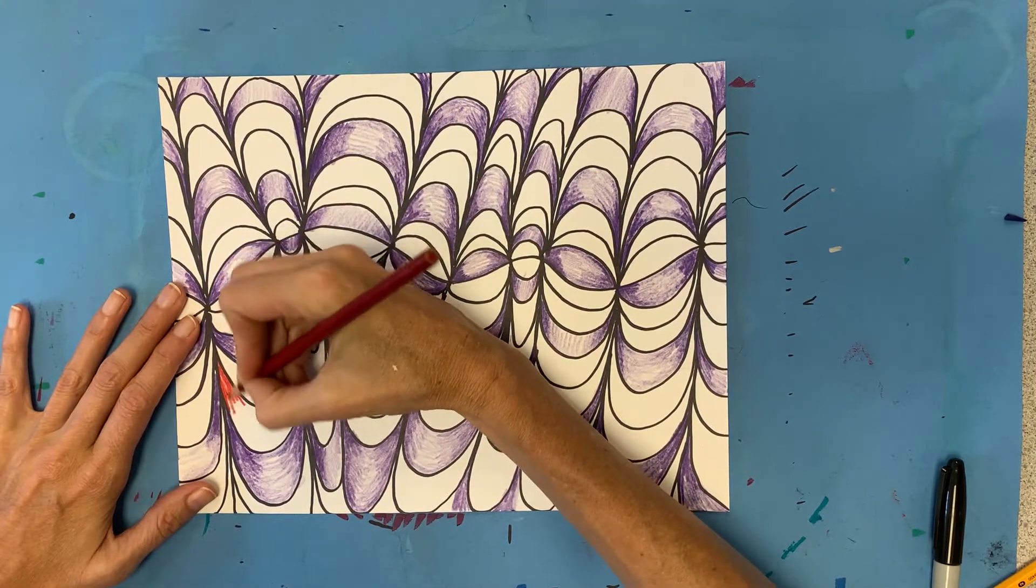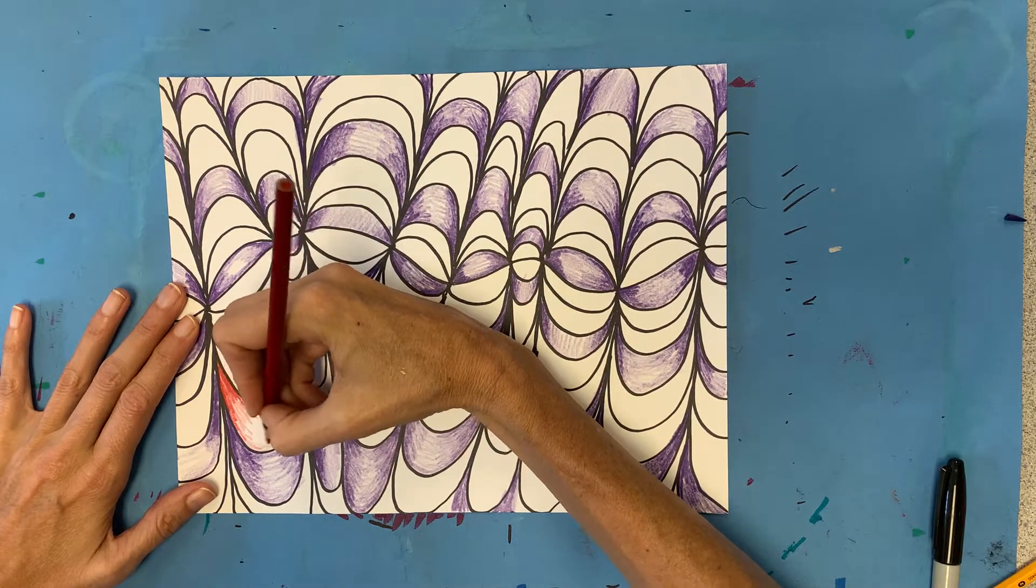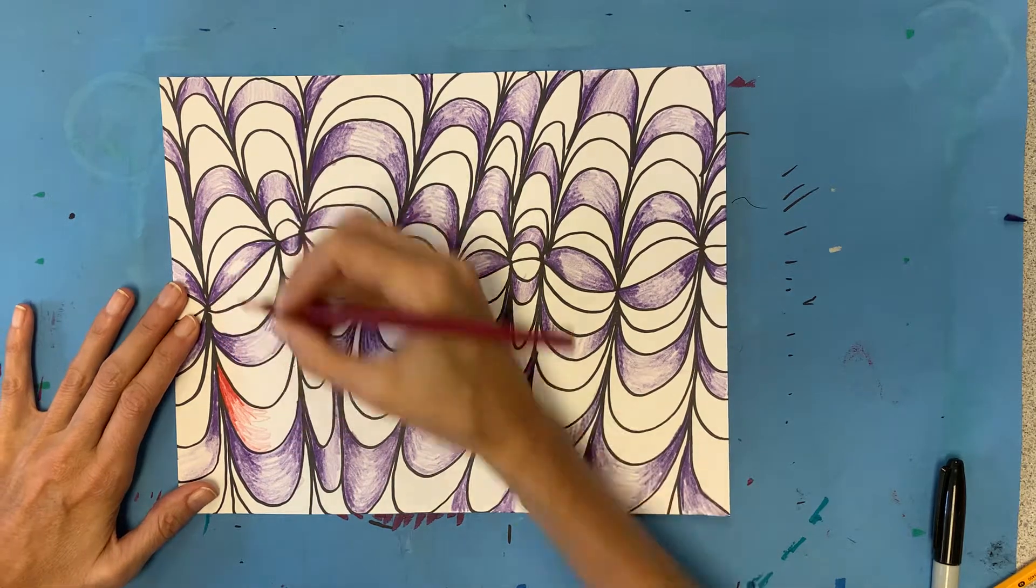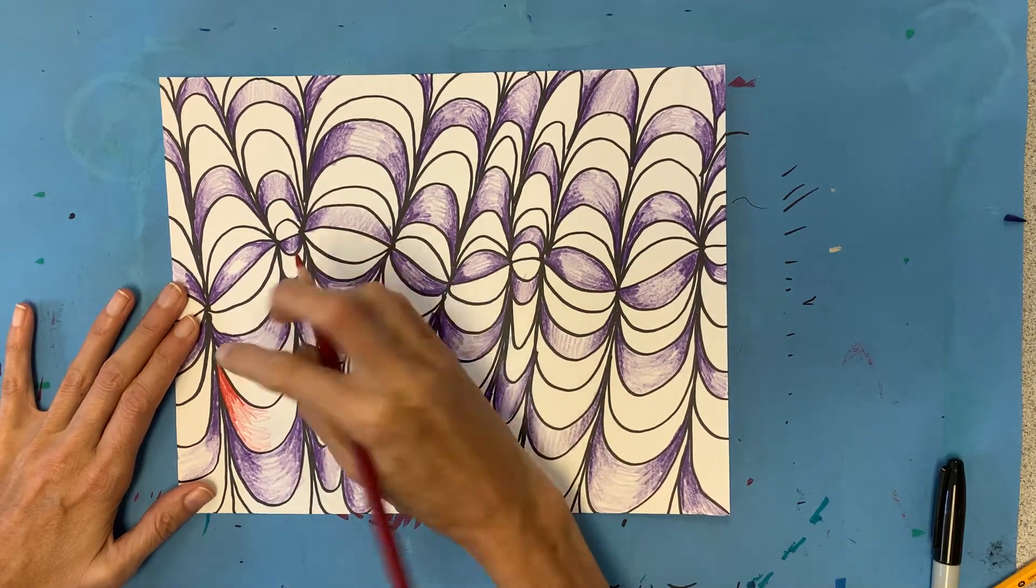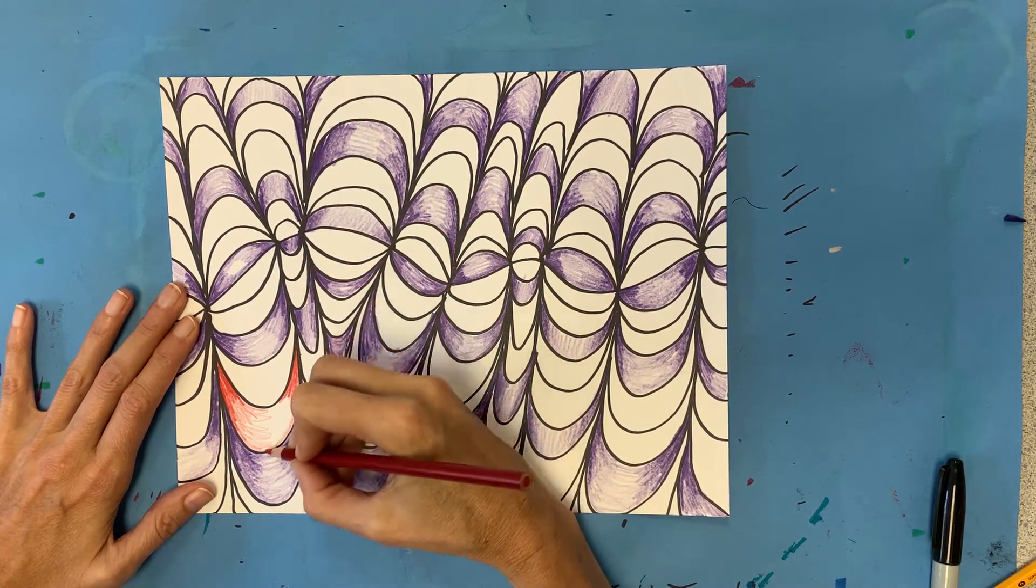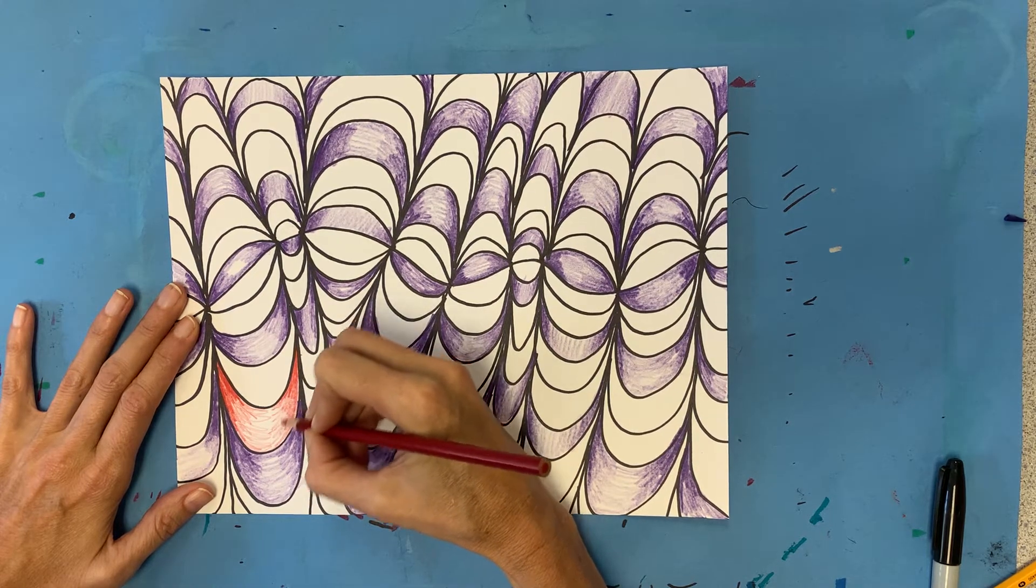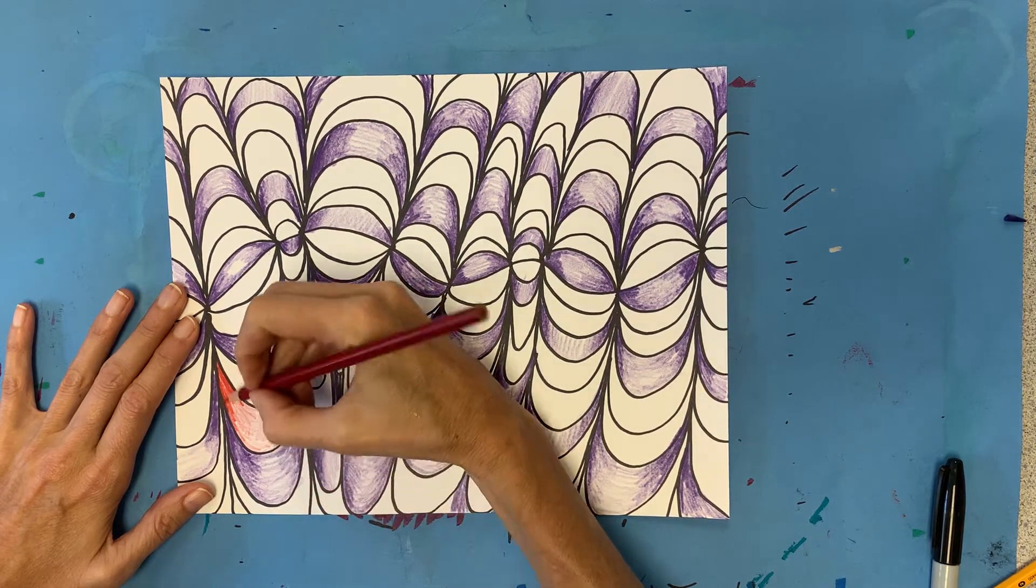Now if you remember we were pressing hard near the corners and then getting lighter as we came up towards the centers. So when I say corners that's these pointy areas here where our arch kind of comes down and then fill in the rest.